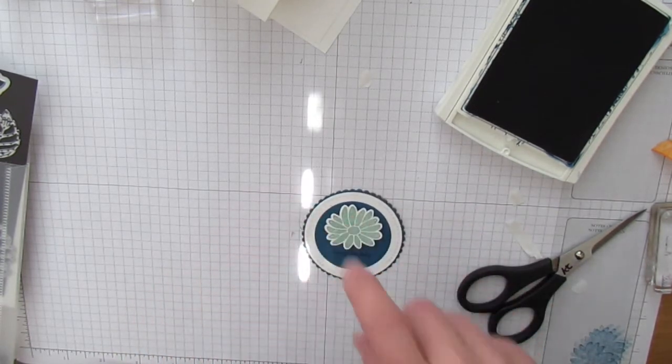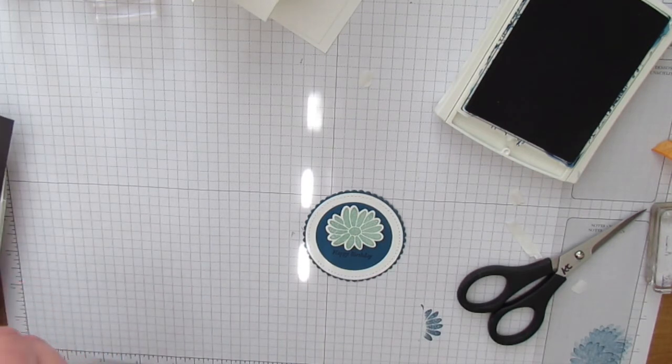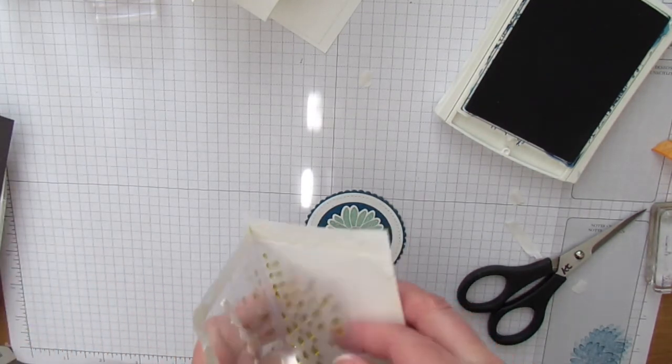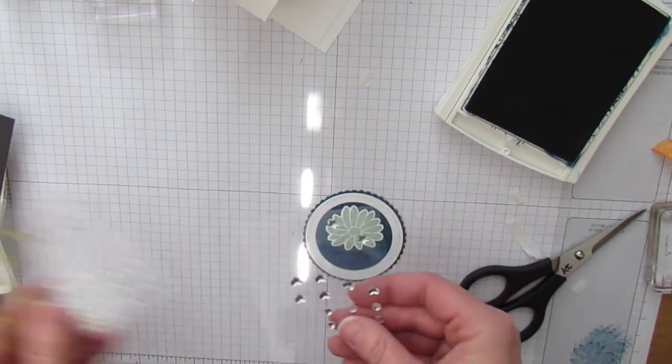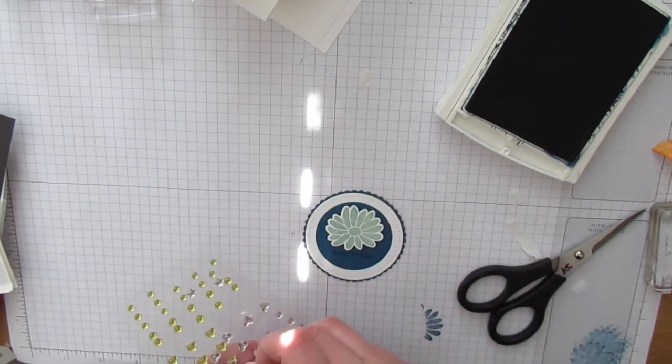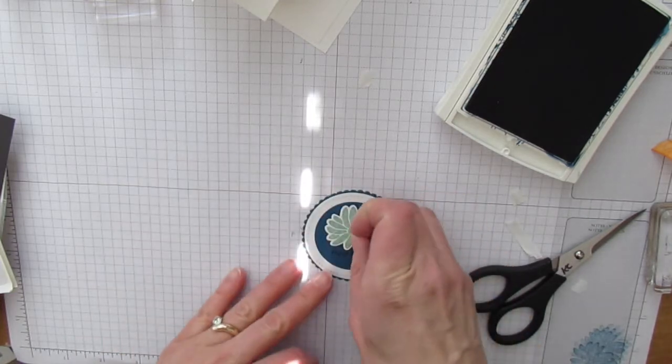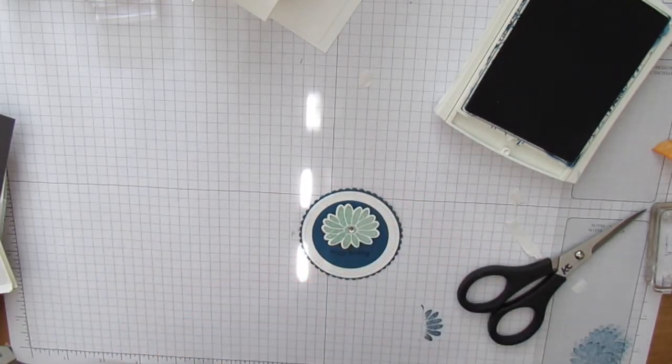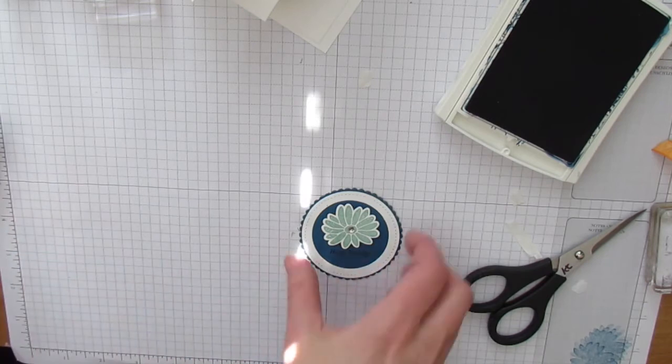And then I thought it needed something, so I grabbed one of the metallic enamel shapes. These are great because you get two sheets in silver and gold. I'm just going to grab one of the centers. And so it's silver, looks super cute.